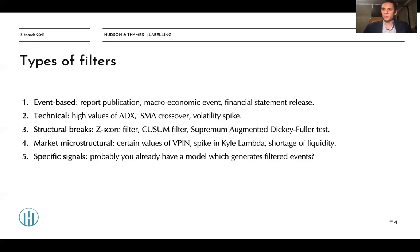What types of filters are actually present and can be used? Some of them are event-based, for example, financial report publication, macroeconomic event, or financial statement release. When we try to filter out events — for instance, when a company releases its fundamental report — we definitely know that one of the most informative features will be financial KPIs or various financial ratios present in this or past reports, because this is fundamental information which drives the price of a security. Sometimes this effect is called post-earnings drift.